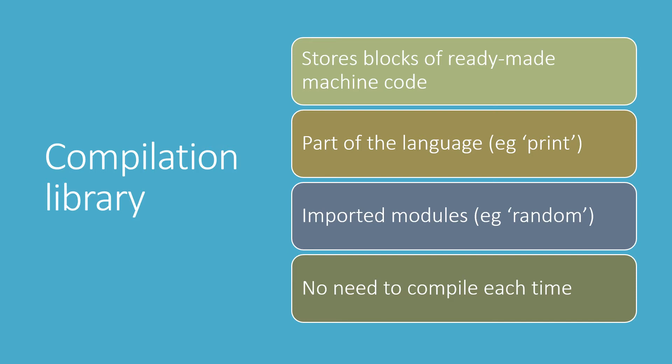The compiler doesn't have to invent that machine code afresh every time, and you may also have imported a module or two. In Python we often import the random module, but there are a load of others, and again the commands for that — because they're going to be reused every time — are often stored in machine code form and just slotted into place in your compiled exe file, and this saves a lot of time. So the machine code for commands that are used a lot might be stored in a compilation library and can just be fitted into your program in the right location.